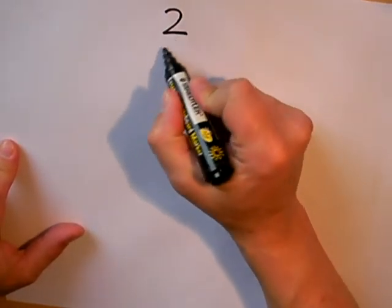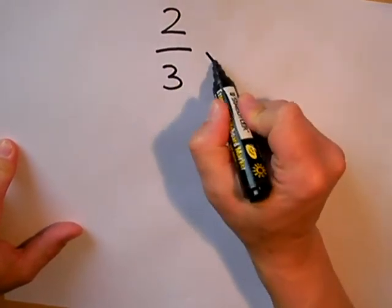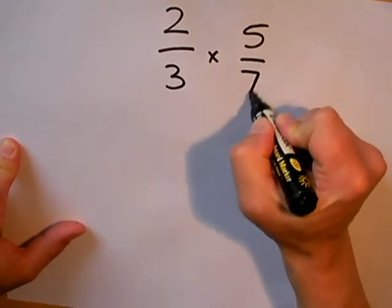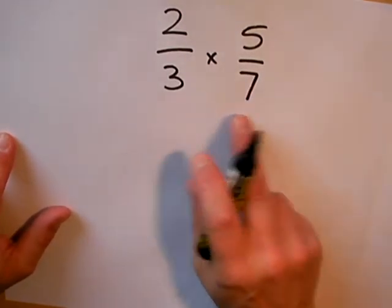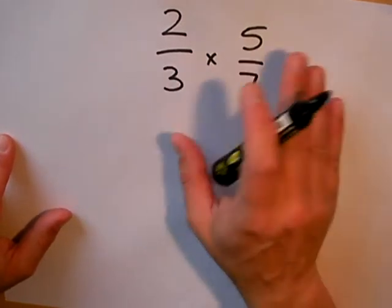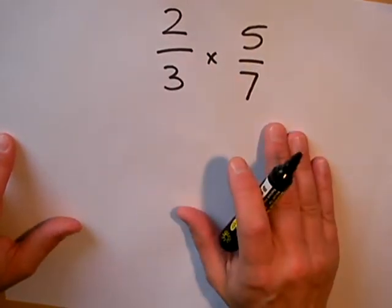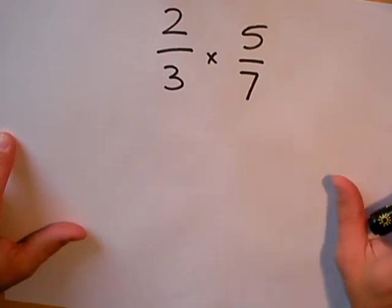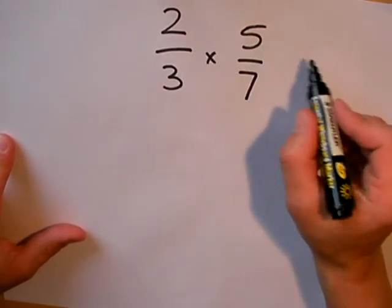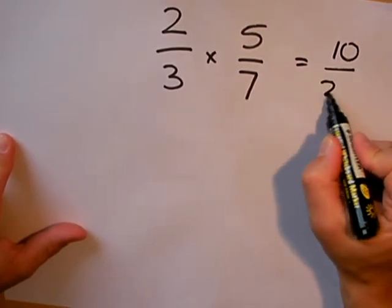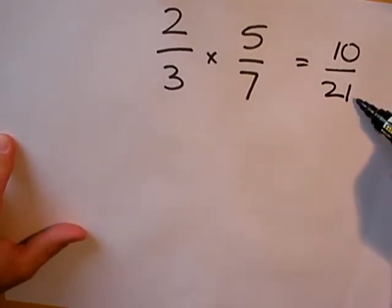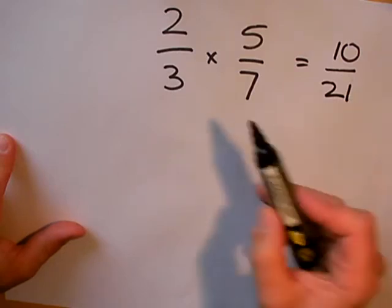Now I'm going to look at some multiplication of fractions. My first example is going to be 2/3 multiplied by 5/7. When we multiply fractions we don't have to worry about making the bottom denominators the same. All we do is multiply the top numbers and multiply the bottom numbers, and there's our answer. So it's actually quite straightforward. 2 times 5 is 10 and 3 times 7 is 21, so our answer is 10/21.